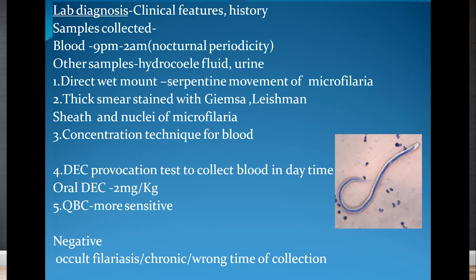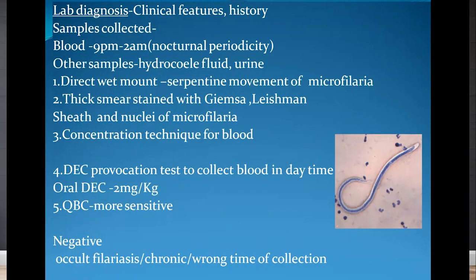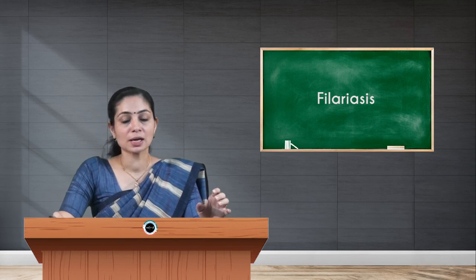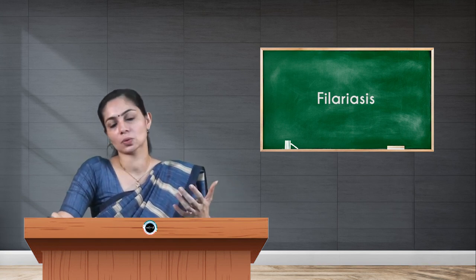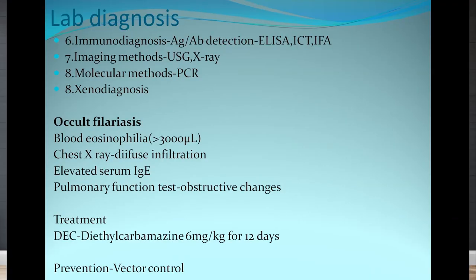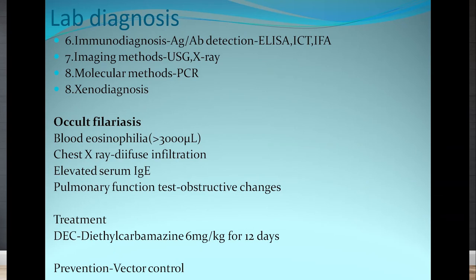Other samples collected include hydrocele fluid or urine. Methods include direct wet mount, where you observe serpentine movement of microfilaria under the microscope. Peripheral smear examination stained with Giemsa or Leishman is done to look for the presence of the sheath and nuclei of microfilaria to distinguish from other species. Concentration techniques can also be used. A more sensitive technique is QBC — quantitative buffy coat. Negative results may occur in occult filariasis, chronic infection, or wrong-time sampling. Other techniques include serology, imaging, molecular methods, or xenodiagnosis. In occult filariasis, you can assess eosinophilia, chest X-ray, elevated serum IgE, or obstructive changes in the lungs.